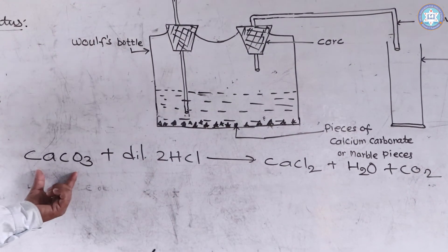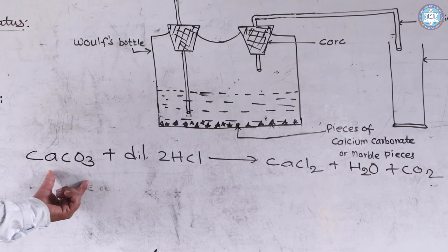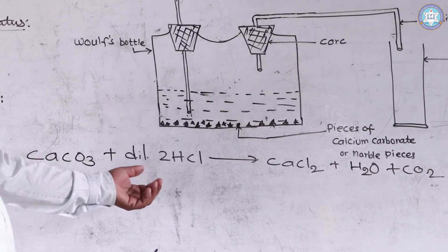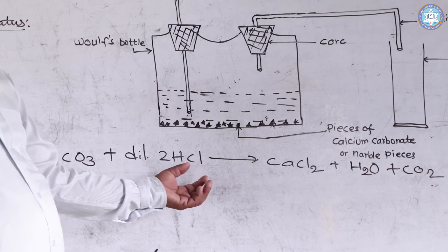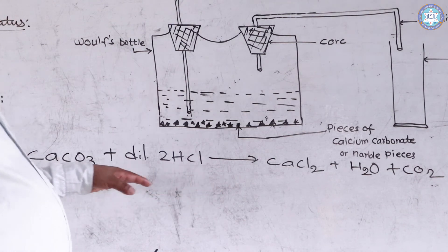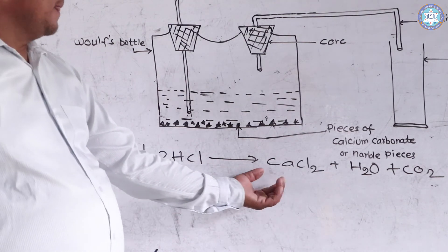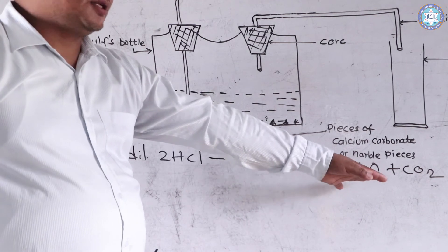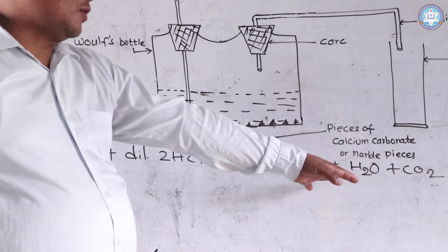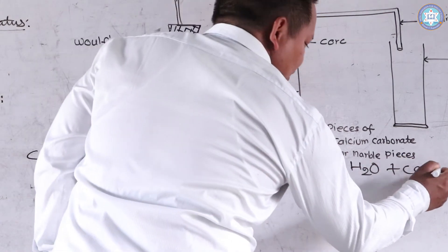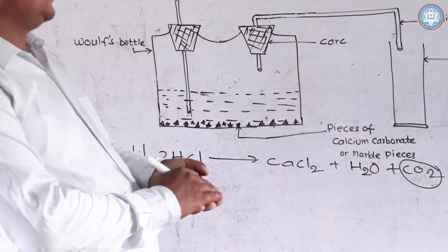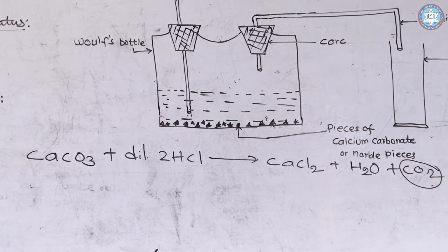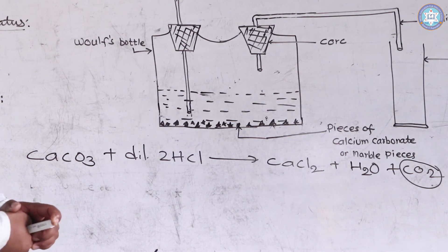The chemical reaction involved is: calcium carbonate (marble pieces) plus dilute hydrochloric acid gives calcium chloride, water, and carbon dioxide gas. CaCO3 + 2HCl → CaCl2 + H2O + CO2. Water is produced as a by-product, and the carbon dioxide gas is collected in the gas jar.